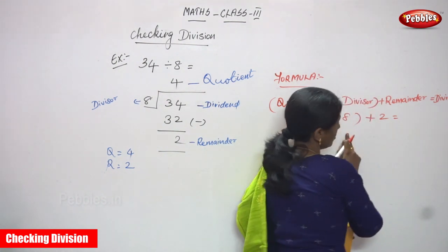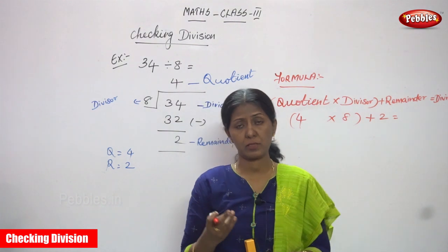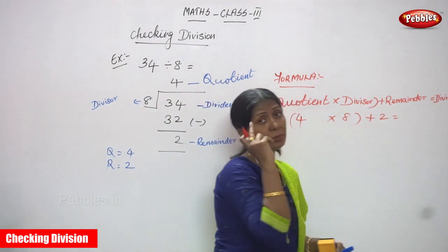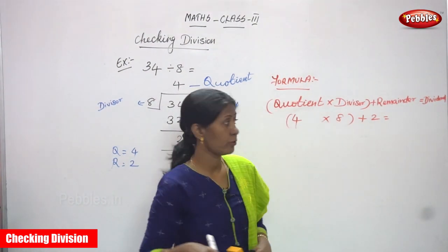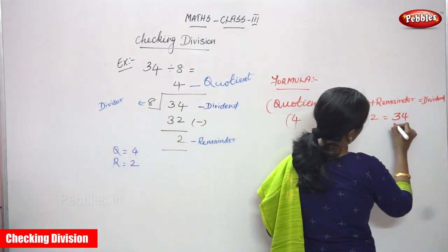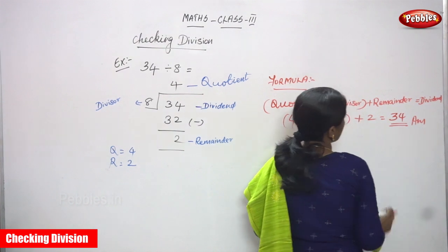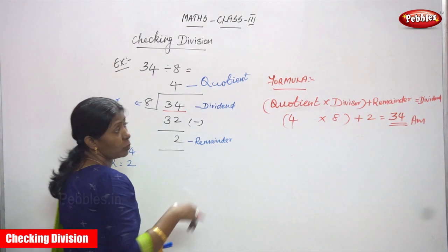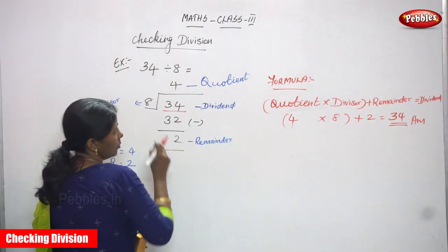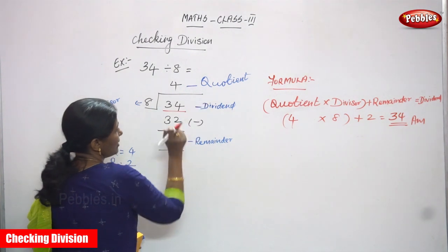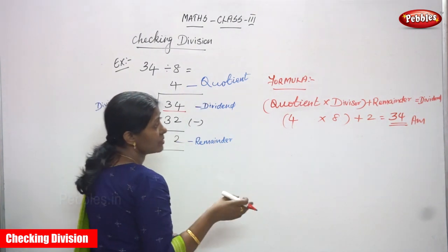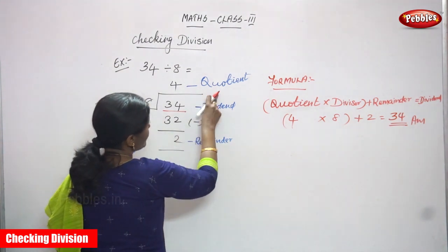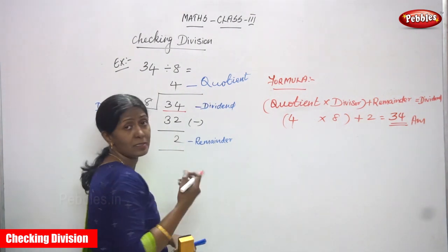So what is the quotient? 4. And what is the divisor? 8. What is the remainder? 2. So you apply: 4 into 8 — you say the 8 times table: 8 ones are 8, 8 twos are 16, 8 threes are 24, 8 fours are 32. Then 32 plus 2: 32 in the mind and 2 on the finger, so 33 and 34. The dividend is 34. So you get the dividend 34, which means your quotient and remainder are both exactly right.